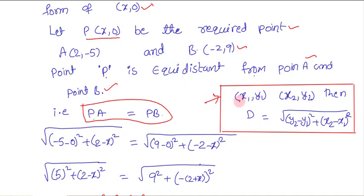When two points x1, y1 and x2, y2 are given, the distance between them is obtained by the formula: square root of (y2 minus y1) whole square plus (x2 minus x1) whole square.